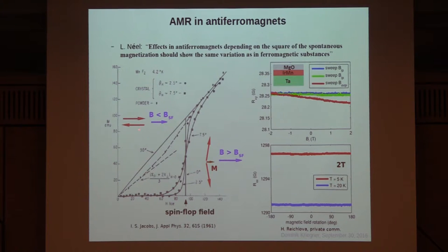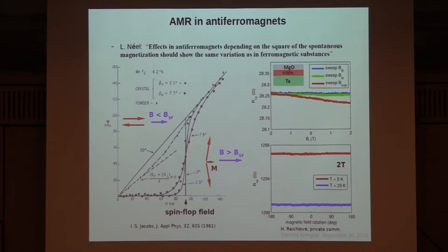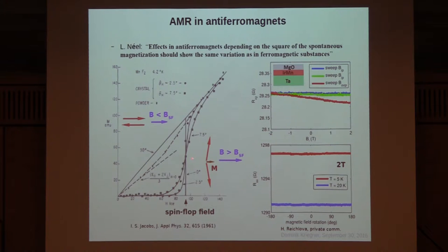Here is the typical picture of manganese difluoride: above nine Tesla there is a spin-flop transition. When you apply the field along the easy axis and cross this transition, the moments can rotate by roughly 90 degrees. They develop a small magnetization which can couple to the magnetic field. If you rotate a field larger than the spin-flop field, you can drag along this magnetization, meaning the Néel order would follow perpendicular to the field.